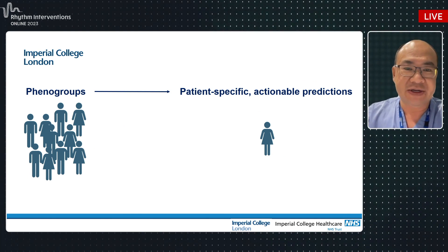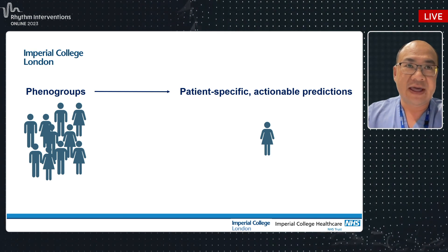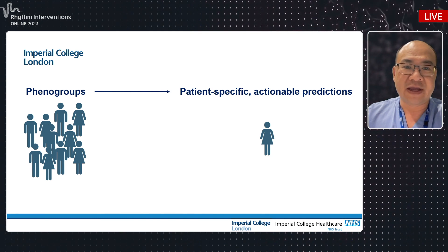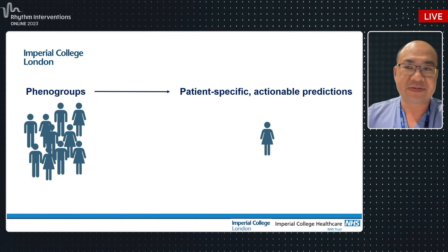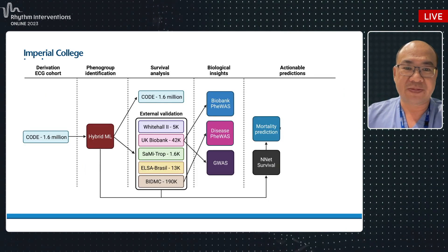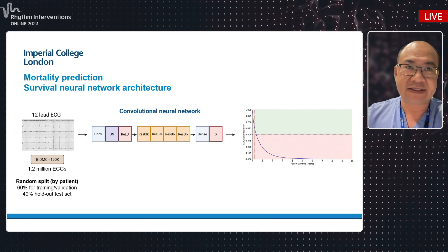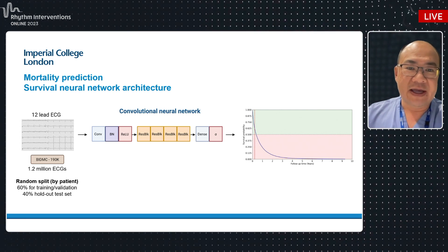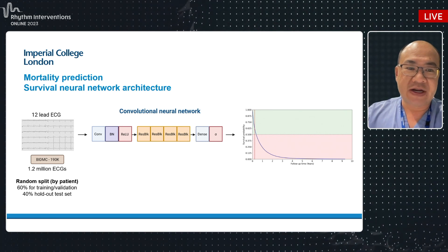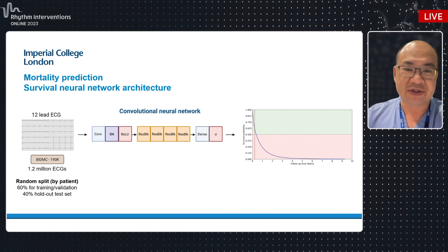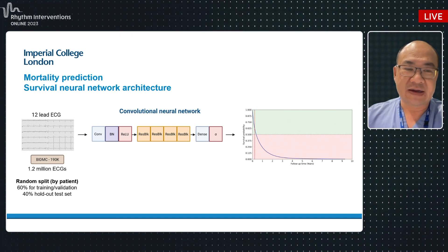Predicting high and low risk groups is valuable, but when you have an individual patient you need to give them a specific risk prediction. We moved from broad phenol groups to individual risk prediction, adapting the approach with a supervised machine learning model. Rather than training to predict simply dead or alive, we trained a model using 1.2 million ECGs to output an individualized survival curve for a specific individual from a single ECG — predicting their likelihood of survival or death over 10 years.